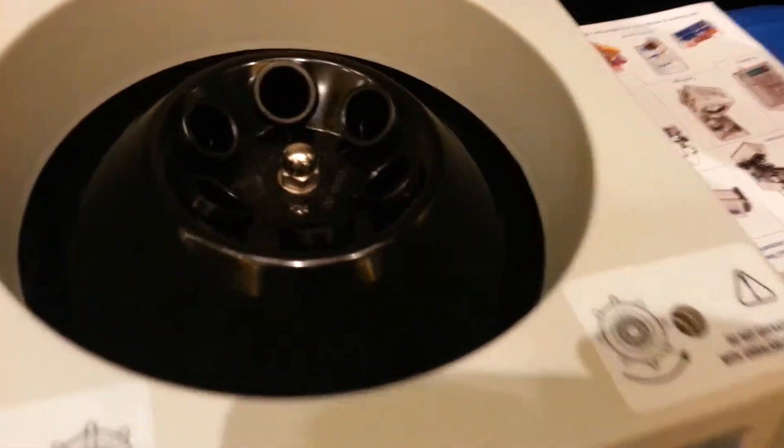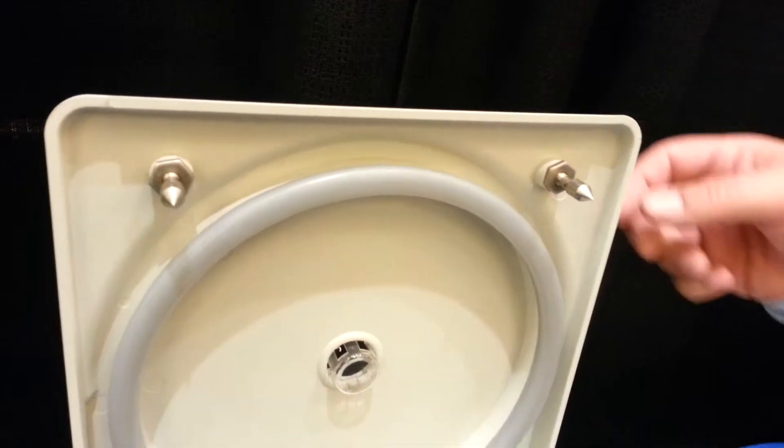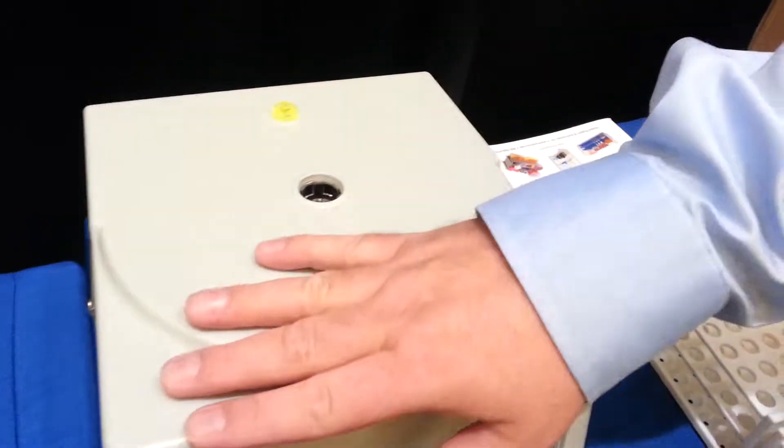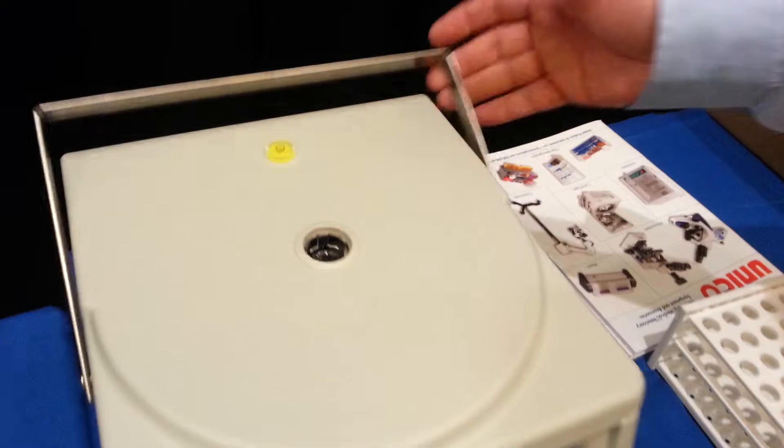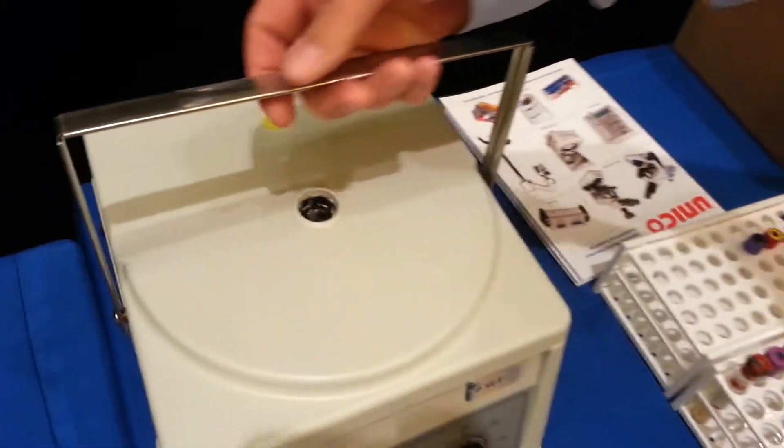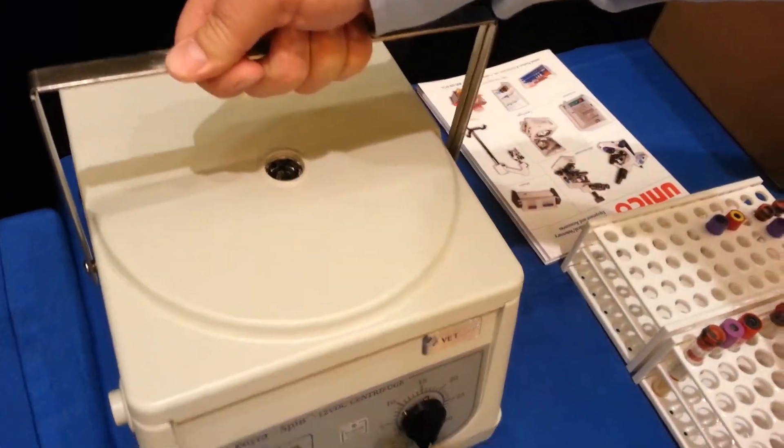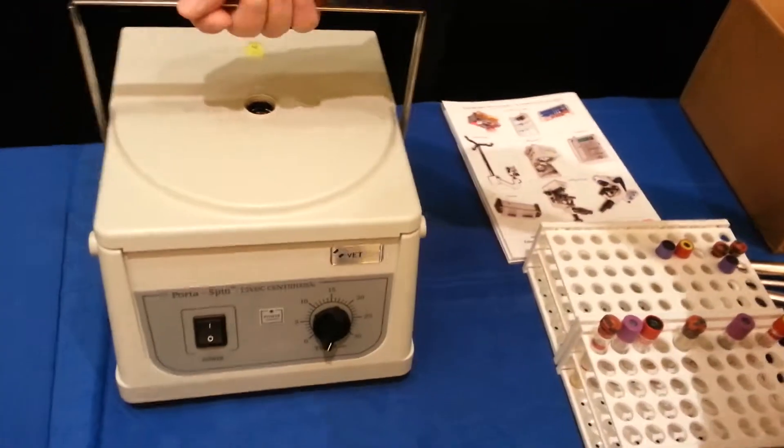If you look up here, you've got a dual lid latching system for safety. I'm going to close the lid. You can see it's got a stainless steel carrying handle, hence the name Portable Portospin.